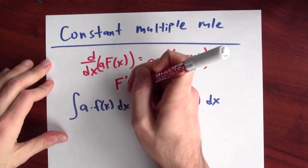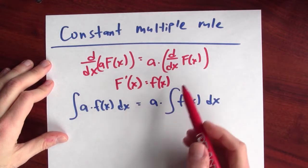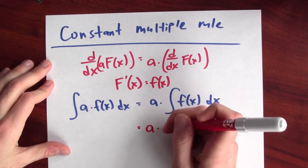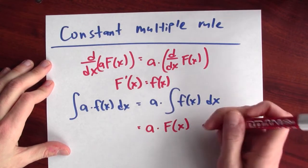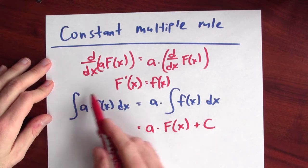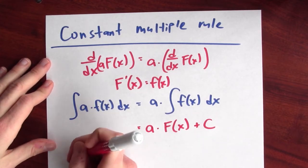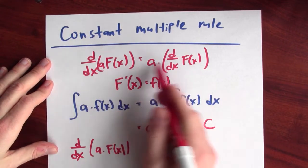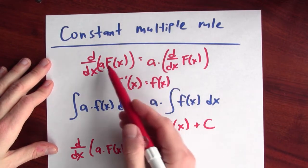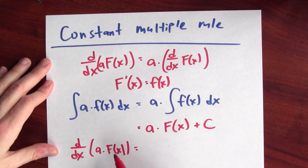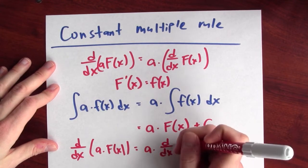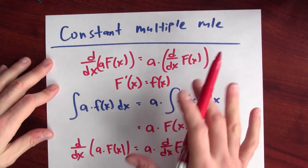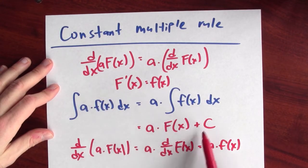It's not too difficult to justify this constant multiple rule for anti-derivatives. Suppose big F of x differentiates to give little f of x — so big F is an anti-derivative for little f. Then a times the anti-derivative of f is a times big F plus c. To confirm this is the anti-derivative of a times f of x, we just check that its derivative equals a times f of x. The derivative of a times F of x is a times the derivative of F of x, which is a times little f of x. This is exactly what we're trying to justify.